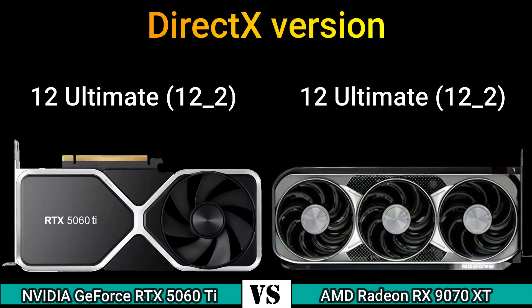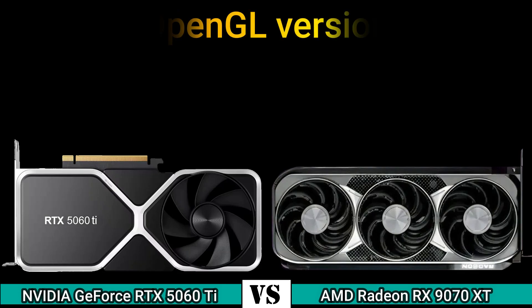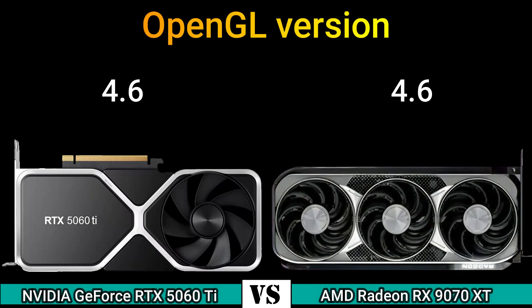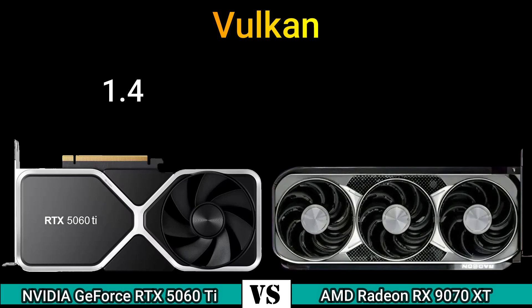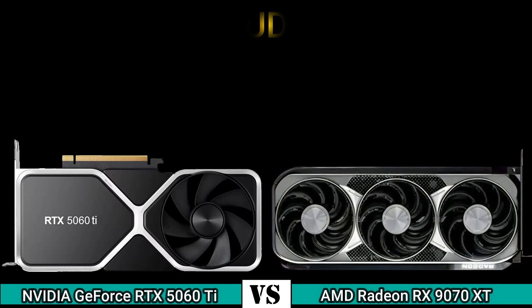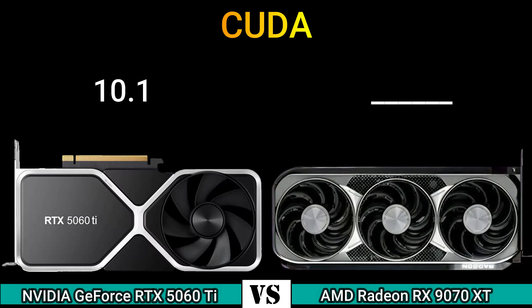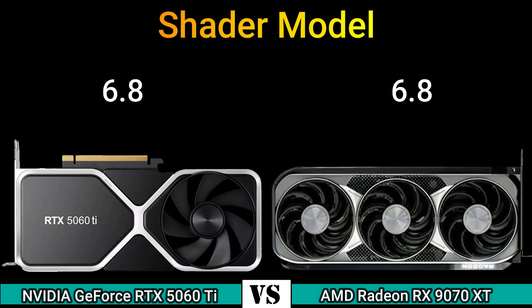Part 3 — Features. DirectX version: 12 Ultimate and 12. OpenGL version: 4.6. OpenCL version: 3.0 and 2.2. Vulkan: 1.4 and 1.3. CUDA: 10.1. Shader model: 6.8. Part 4 — General information.